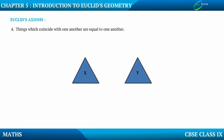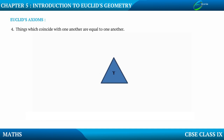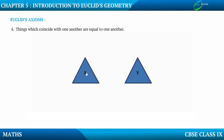Things which coincide with one another are equal to one another. Coincide means which overlap one another. Here there are two triangles — part X and part Y — and you can clearly see they overlap each other, so X is equal to Y. Also, look at these two circles: the radius of both circles is 3 units. They coincide each other, therefore both circles are equal to each other.